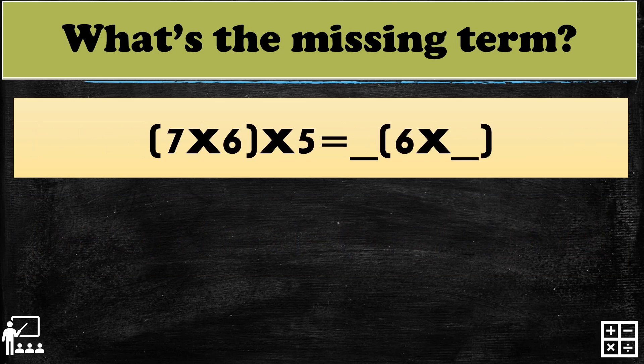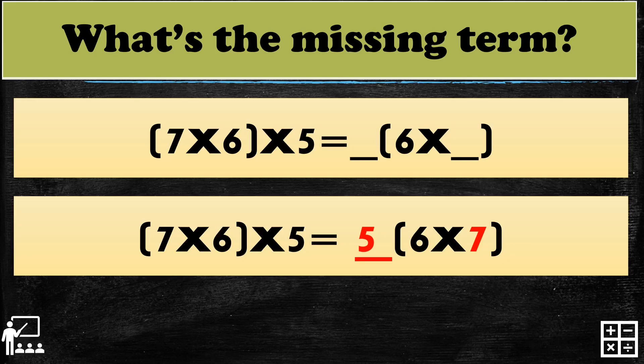Next: 7 multiplied by 6 multiplied by 5 equals blank multiplied by 6 multiplied by blank. What do you think are the missing terms? It's 7 and 5. That's right.